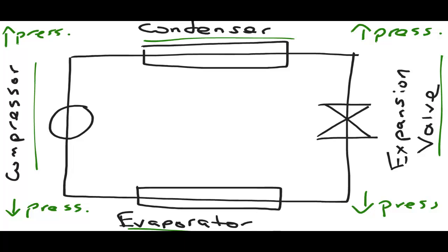The lines on this diagram represent pipes that contain a refrigerant. Now let's start at the compressor. The compressor's job is to raise the pressure of the refrigerant. The arrows in each corner of the screen show high and low pressure.